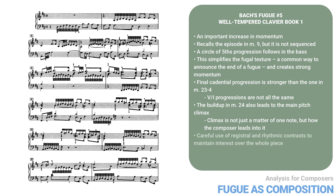Overall, observe Bach's careful use of registral and rhythmic contrast to maintain interest over the whole piece, as well as his careful planning of its overall progression. Motive A, which has the most momentum, is used to create extra energy in a very controlled way. In other words, Bach treats the fugue as a real musical composition and not just as an academic exercise. And, as in any good composition, the distinguishing features of the work emerge from the character of the musical material.